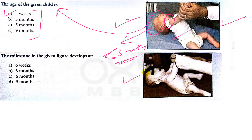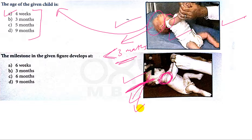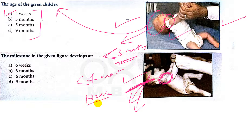Now coming to the next picture: the child has neck holding capacity, but the head is not in control — head is lagging back or hanging back. That is why the age of the baby is less than four months. But as the baby has neck holding capacity, which is achieved at around three months of age, B is the correct answer.